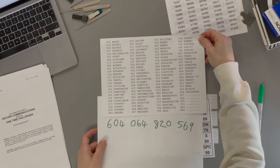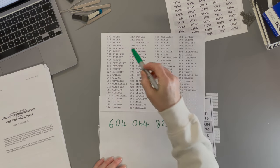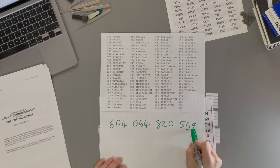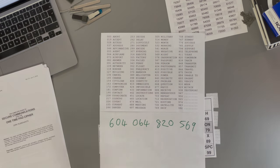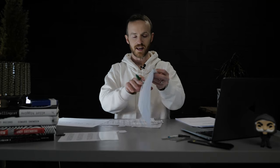So here's a message I prepared earlier: 604 photograph, 064 airplane, 820 tomorrow, 569 night. Photograph airplane tomorrow night. Nice. And it's also much shorter than writing out the words photograph airplane tomorrow night, which has this many letters in it. So that's the big benefit of using a pre-planned sheet of paper like this. You can take a ten-letter word and make it a three-number word.